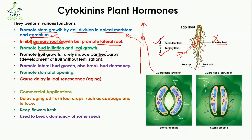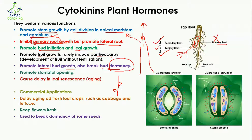Cytokinin promotes lateral bud growth and also breaks bud dormancy. Lateral buds are the side buds on the stem. Dormancy means the inactive period of a bud — the bud is present but not growing or converting into a flower. Cytokinin breaks this bud dormancy and allows the bud to be converted into a flower.